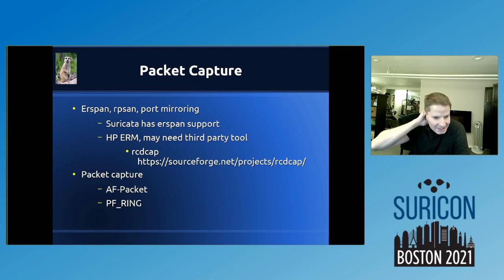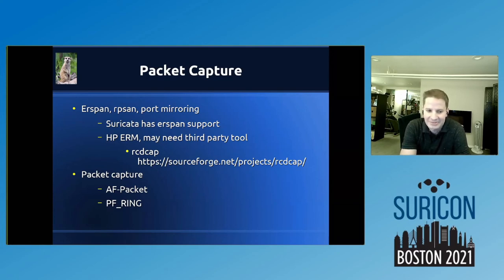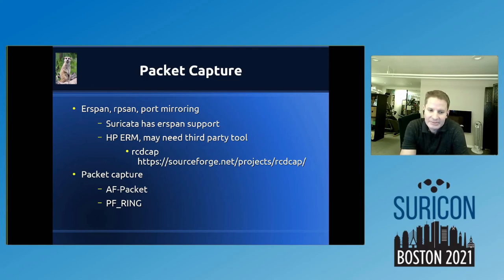For packet capture, AF packet and PF ring have both worked pretty well. Mostly AF packet now — it got to be extra work to keep the PF ring kernel module going, and AF packet works fine. In the environments I'm in I'm not hitting a significant amount of traffic, but if you're working with higher traffic volumes, PF ring would handle large flow better.